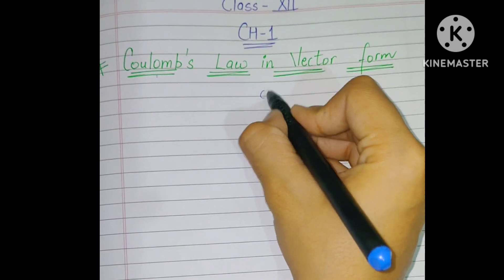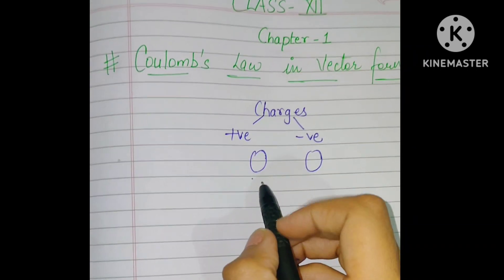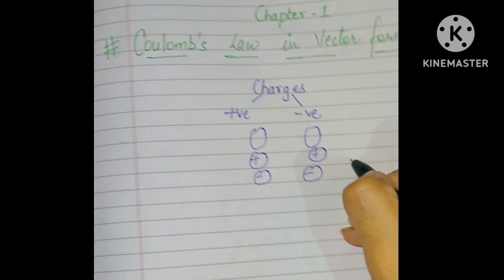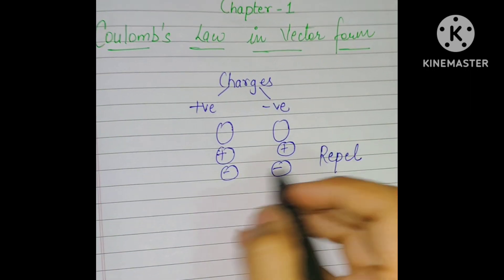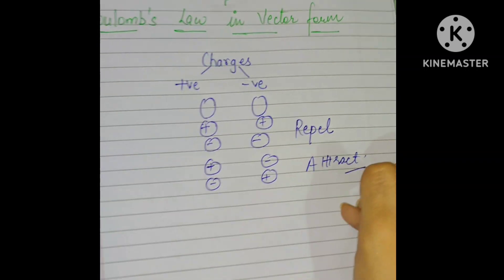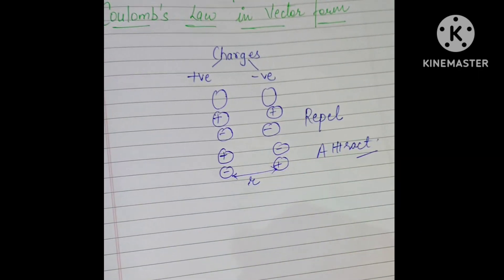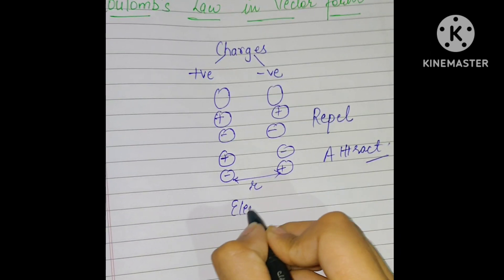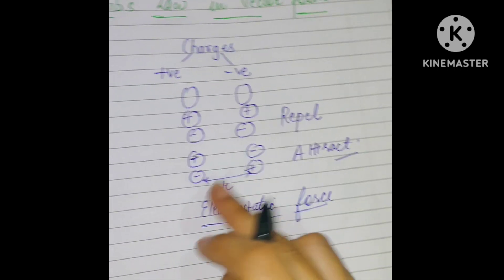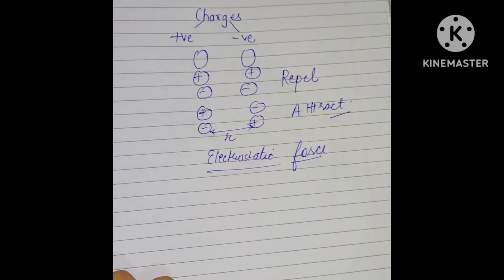As you all know, there are two types of charges: positive charge and negative charge. If both charges are of the same polarity — positive-positive or negative-negative — they will repel each other. If both charges are of opposite sign — positive-negative or negative-positive — they will attract each other. When two charges are placed at some distance, they exert a force known as electrostatic force.